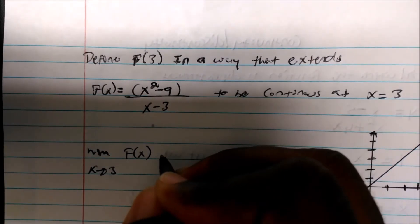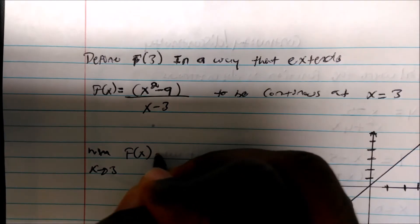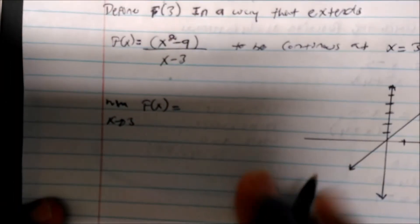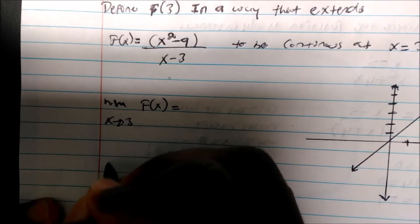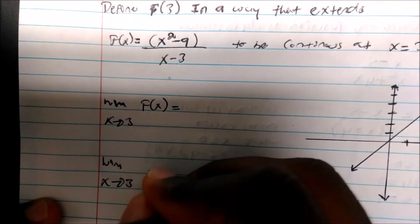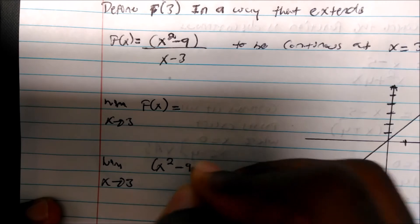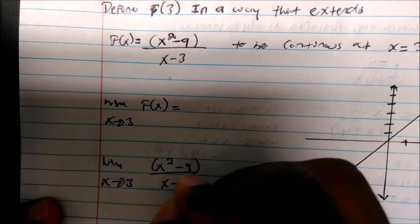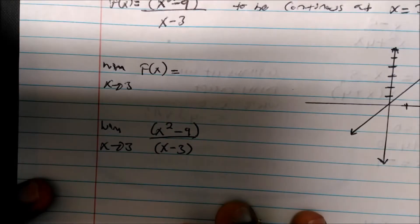Well, maybe I should write that. The limit as x approaches 3 of the function x squared minus 9 over x minus 3, right?